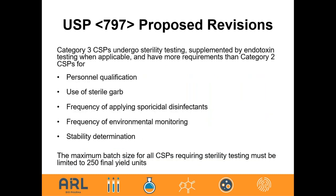Category three CSPs undergo sterility testing supplemented by endotoxin testing when applicable, and have more requirements than category two for personnel qualifications, sterile gowning, frequency of applying sporicidal disinfectants, increased environmental monitoring, and stability determination. By increasing quality by design and building it into the process, risk is mitigated. There is also a proposed revision requiring that all CSPs requiring sterility testing must be limited to a batch size of 250 final yield units.